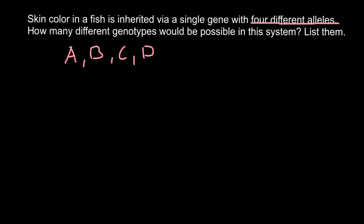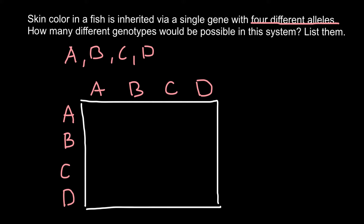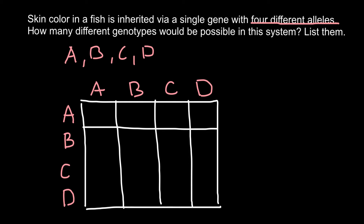How many different combinations can these alleles have? The best way to solve this problem and not miss any combinations would be to make a kind of grid square. We put A, B, C, and D on top and also the same four alleles A, B, C, and D on the side. Now let's build a grid — but do not be quick to assume that we are going to get 16 combinations.